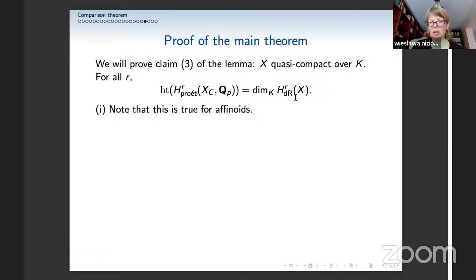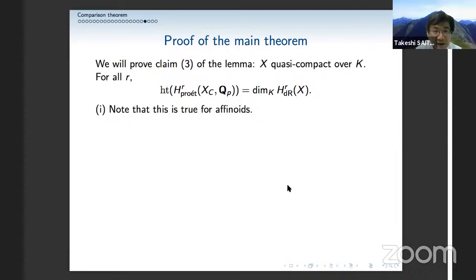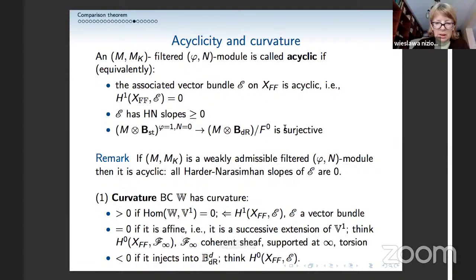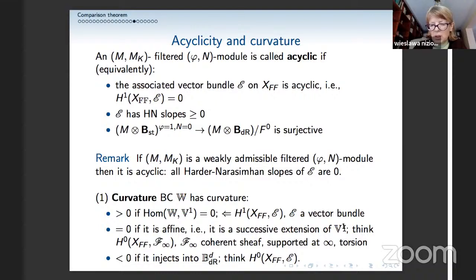To prove our theorem, it is enough to prove that the height of the pro-étale cohomology equals the dimension of de Rham. First observation: this is true for affinoids, as we proved earlier. Now the question is how to pass from one affinoid to quasi-compact X. One might think it should be easy going from one affinoid to two to five affinoids, but we were stuck — we couldn't pass from one affinoid to two coupled affinoids. The height functor from BC spaces to BDRAM modules maps W to Hom(W, B_dR). This is not exact in general, but if W has non-positive curvature, then we do recover the height of W from the rank of the image, which is what we want from categorification.